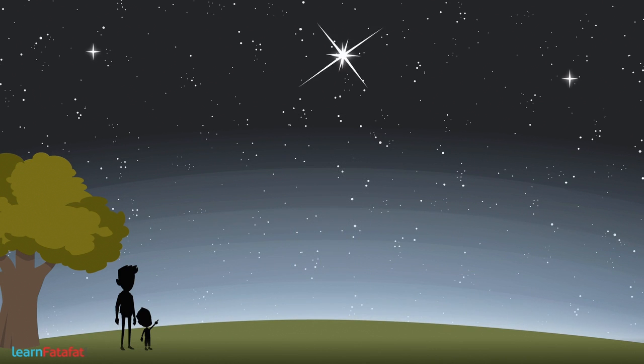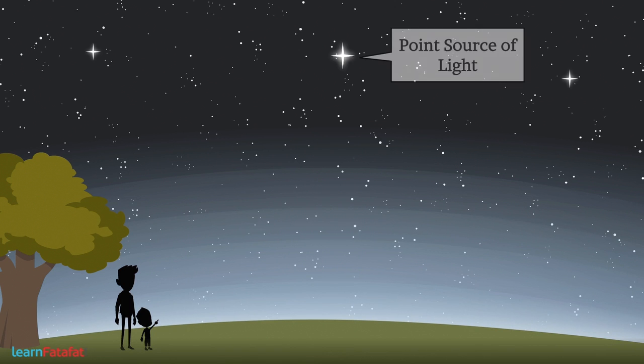Now, let's talk about a star. A star has its own light. Since they are at far distance from the Earth, they look point-sized and so are treated as point sources of light.